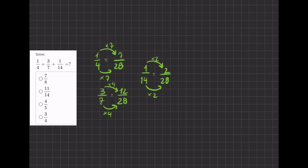Now we can add all of our fractions together. We have 7/28, plus 12/28, plus 2/28. When we add these, we just have to add all of the numerators together to get 21, and we keep our common denominator of 28.